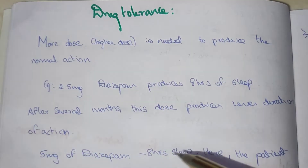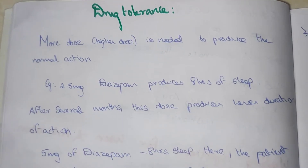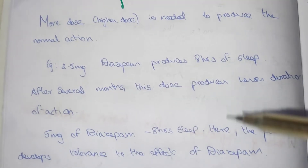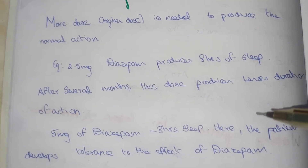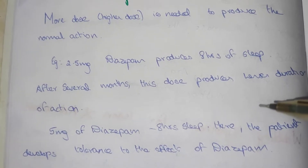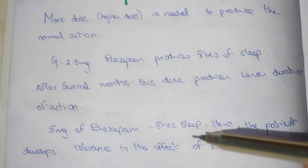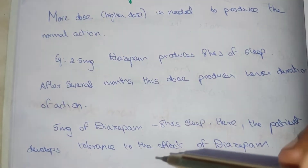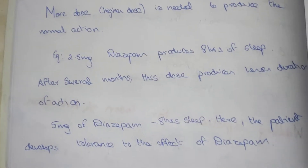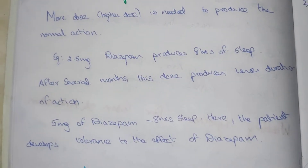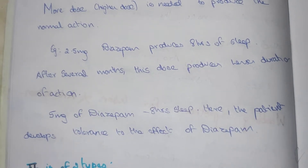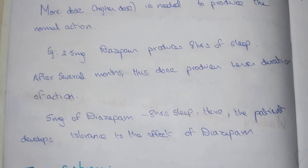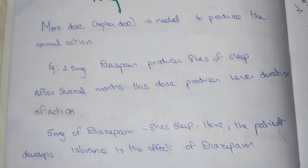After several months, this dose produces less duration of sleep because of drug tolerance. So 5 milligram of diazepam is required for eight hours of sleep. The patient develops tolerance to the effect of diazepam — first 2.5 milligram produces eight hours of sleep, now five milligram is needed for eight hours of sleep. This tolerance produced by our body is known as drug tolerance.